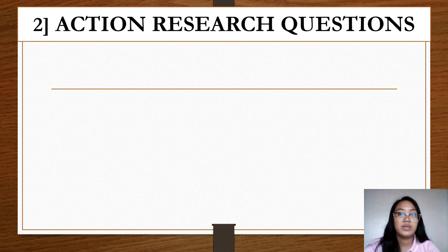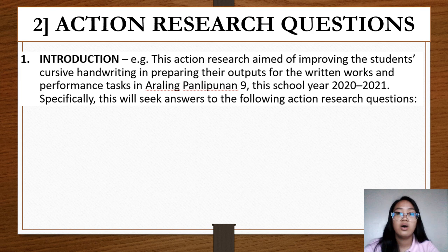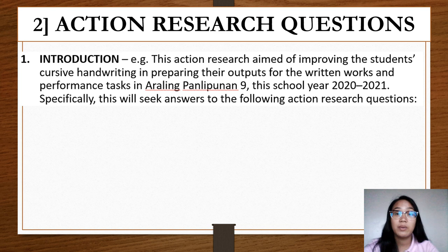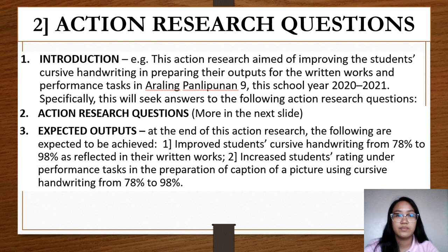Next, we have the action research questions. We have four components for action research questions. Number one, we have the introduction — we have to cite the goal of our study along with the respondents and the timeline. For example: 'This action research aims at improving the students' cursive handwriting in preparing their outputs for written works and performance tasks in Araling Panlipunan 9, school year 2020-2021. Specifically, this will seek to answer the following action research questions.' For the action research questions, we are required to provide a minimum of three questions.